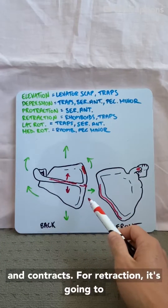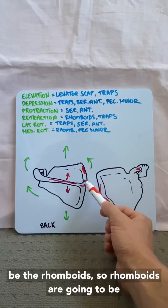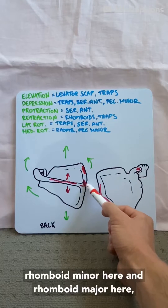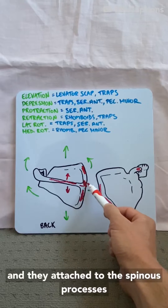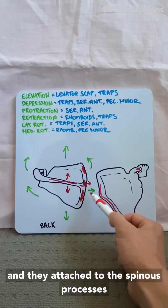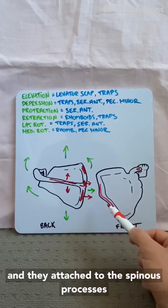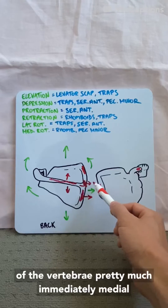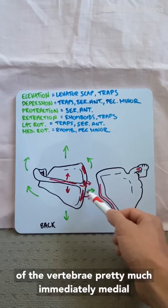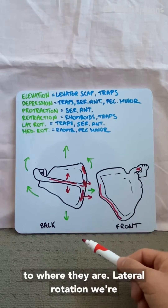For retraction, it's going to be the rhomboids. So the rhomboids are rhomboid minor here and rhomboid major here, and they attach to the spinous processes of the vertebrae pretty much immediately medial to where they are.